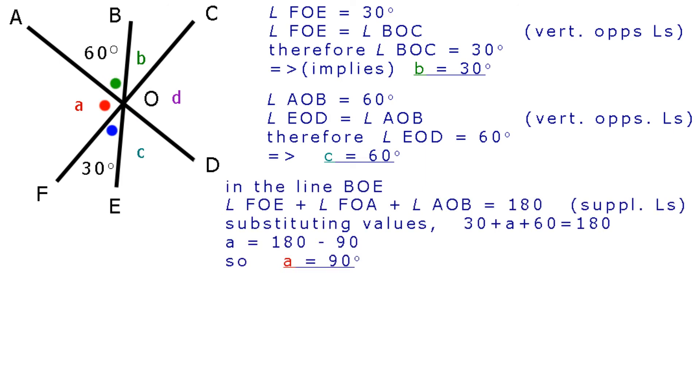In the straight line BOE, angle FOE plus angle FOA plus angle AOB equals 180 degrees. They are supplementary angles. Substituting the values, 30 plus A plus 60 equals 180. So A equals 180 minus 90, and A equals 90 degrees.